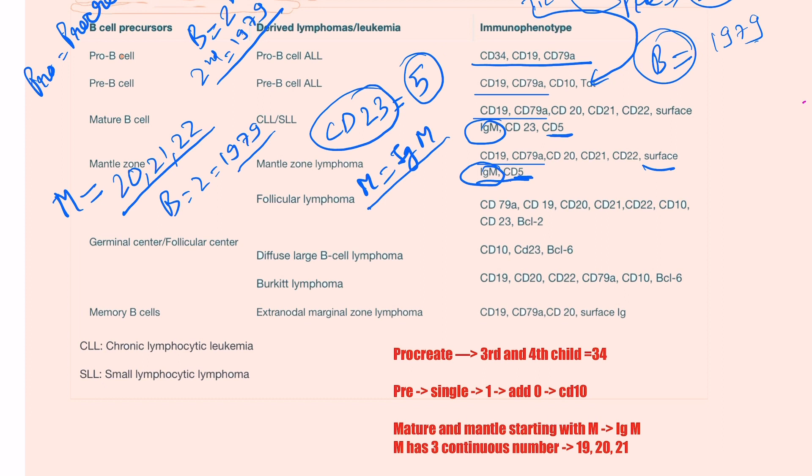Now you go on to the mantle zone. Mantle zone, we have to remember that mantle is a covering that we often used to wear in our childhood or we used to see in our cartoon. At that time our age was used to be five years, but remember that at that time our age was not 30 or 23 years. So CD23 is negative here in mantle zone.